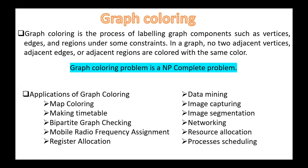Hello everyone. Today our topic is graph coloring. Graph coloring is the process of labeling graph components such as vertices, edges, and regions under some constraints. In a graph, no two adjacent vertices, adjacent edges, or adjacent regions are colored with the same color.